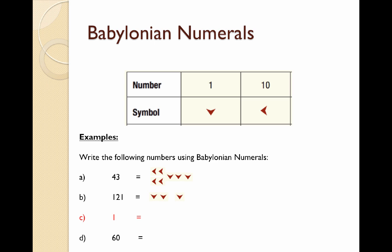For question C I want to represent the number 1, and D is 60. I've done C and D to make a point. To show number 1 you just need a down arrow in the ones column — simple. To show the number 60 you need to put a 1 in the 60s column, which looks exactly the same as number 1. This is why the system was confusing. They did bring in some symbols for zero later on, but until then it was quite ambiguous.